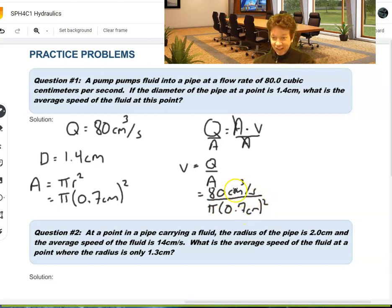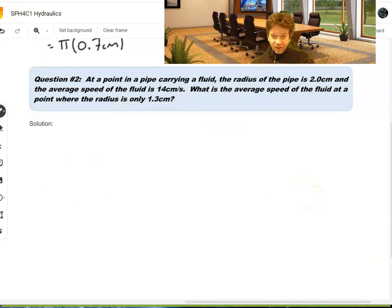And area is pi times 0.7 centimeters squared. The units, you'll have centimeters cubed and centimeters squared. So, you're going to be left with centimeters per second, which is the units that we want. And if you just put that onto your calculator, 80 divided by pi times 0.7 squared, get about 52 centimeters per second.